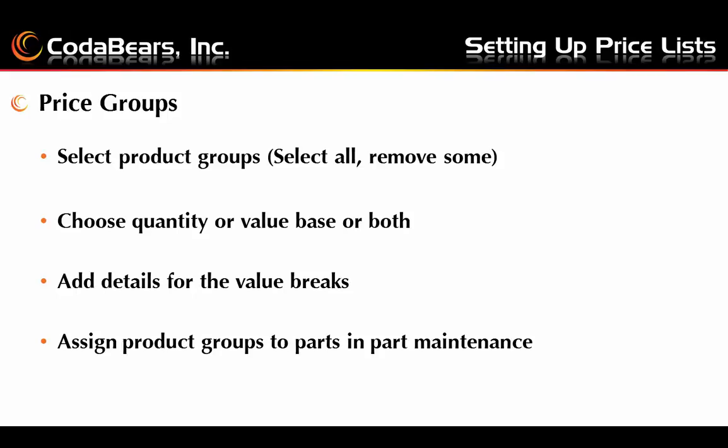Once these selections are made, you will then need to add the details for each price group regarding the value breaks on the value breaks tab. And finally, you will need to make sure that parts you set up in Part Maintenance have product groups assigned to them if you want them to utilize the price groups. The parts need to have product groups that are included in your price group list of product groups.